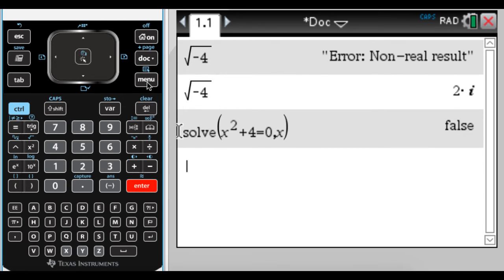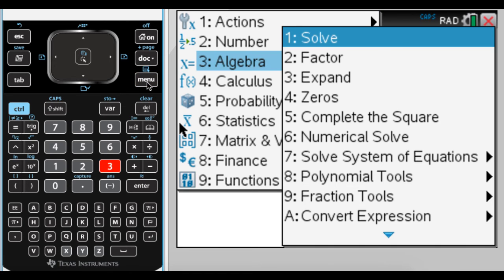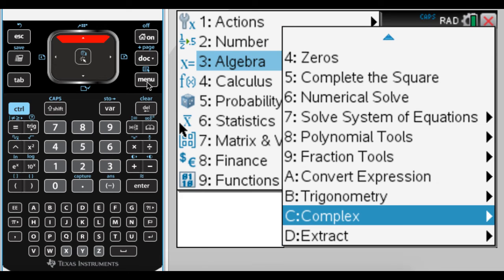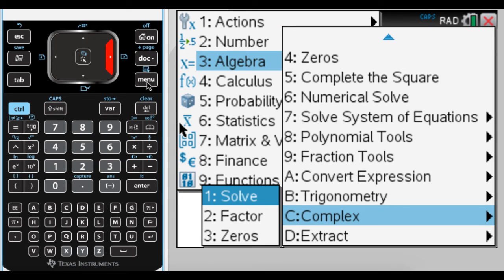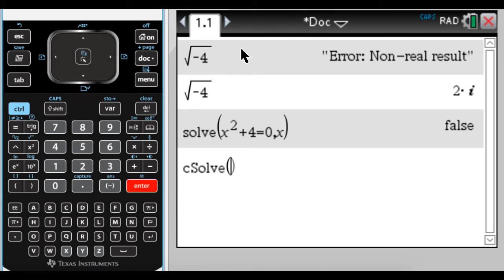What you do is you press menu, and you go to algebra. And I usually press up to get to the bottom of the list, and I want complex. And in complex, there's another solve function. Press enter. You can see really the only difference in terms of what it looks like is there's a c here. And the c stands for complex. So if I do c solve, x squared plus 4 equals 0, x, press enter, I get 2i and negative 2i.